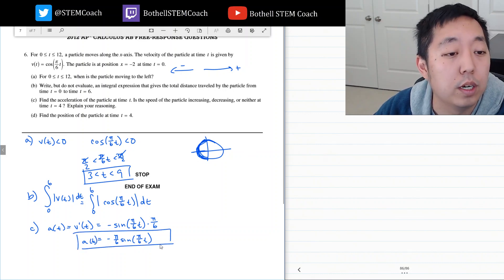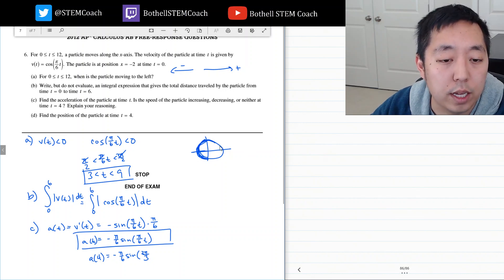Now we want to know at t equals 4 what the acceleration is. It's negative pi over 6 sine of 2 pi over 3. On our unit circle 2 pi over 3 is here. The sine would be positive. So this is positive but then this negative makes it negative. So this is less than 0.